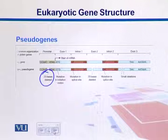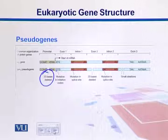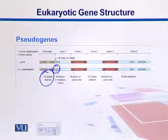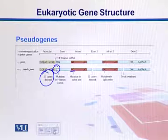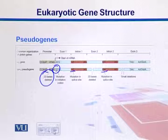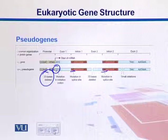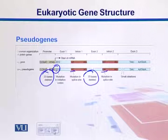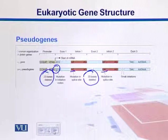In the start codon, rather than ATG it is GTG. We also see mutations in the splice sites — rather than GT, it is GC. There are also some other small deletions, and in exon 2, another 20 bases are deleted. In this way, a normal gene has become a pseudogene.